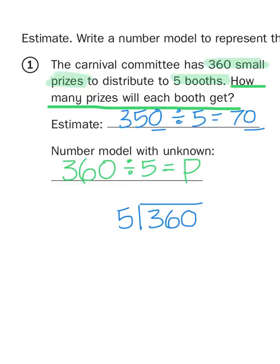So now I have to ask myself, how many groups of five can I get out of 360? Well, five times ten is 50, so I know I can at least get ten groups. Five times twenty is a hundred, so I know I can get at least twenty groups.